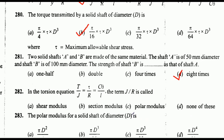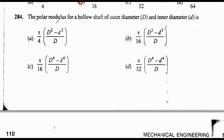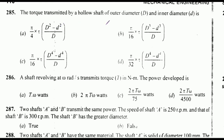The polar modulus for a solid shaft of diameter d is — the correct answer is option B: πd³/16. The polar modulus of a hollow shaft of outer diameter D and inner diameter d is — option C: π/16 × (D⁴ − d⁴) / D. The torque transmitted by a hollow shaft of outer diameter D and inner diameter d is — option C: π/16 × τ × (D⁴ − d⁴) / D.